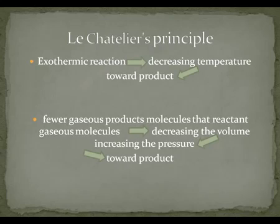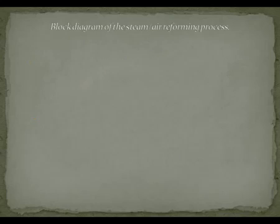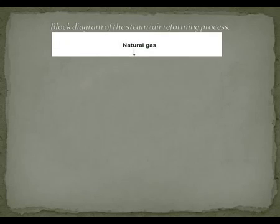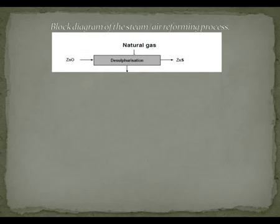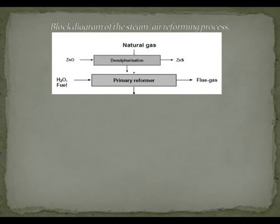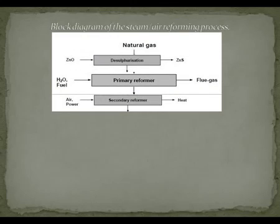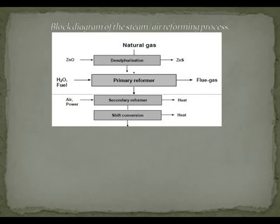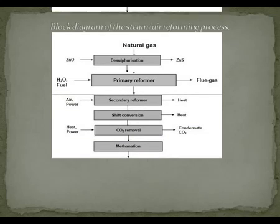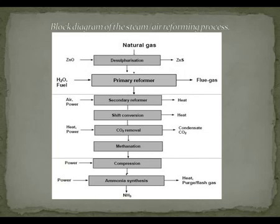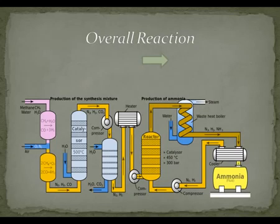Now that you have refreshed your mind on these three principles, I will start explaining the ammonia production process. Starting with natural gas coming through, the second part is desulfurization, going with primary reformer, secondary reformer, shift conversion, CO2 removal, methanation, compression, and finally ammonia synthesis.